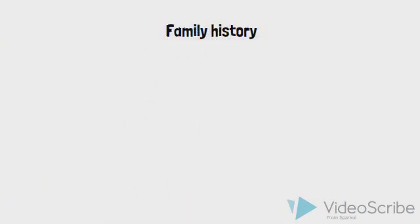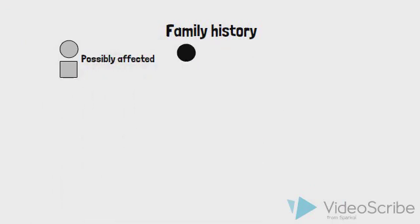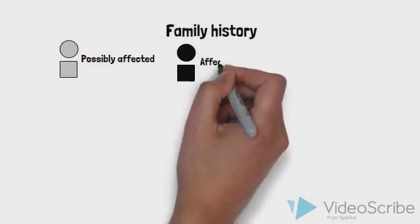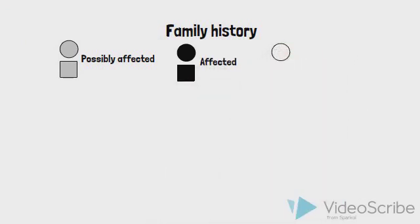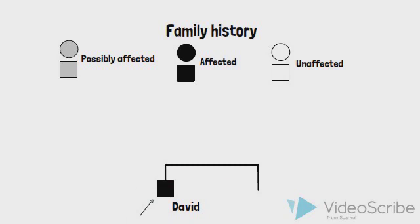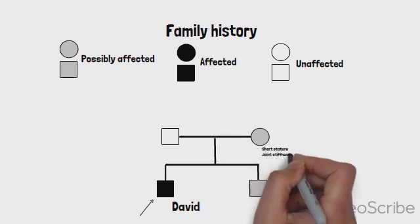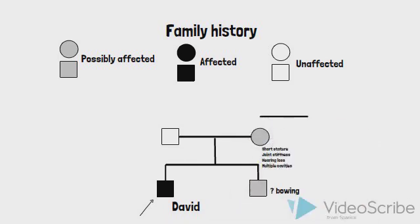Your preceptor asks you to get started with taking David's history. As a keen senior medical student, you begin by introducing yourself to the family and gathering more information about David, including the medical history. You recall that drawing a family pedigree is crucial for identifying the possibility of a genetic disorder in a family. You complete a family history asking for similar symptoms in any family members. The mother reports a personal history of short stature, joint stiffness, hearing loss, and multiple cavities. Her mother had similar symptoms and was told as a girl that she had vitamin D resistant rickets.